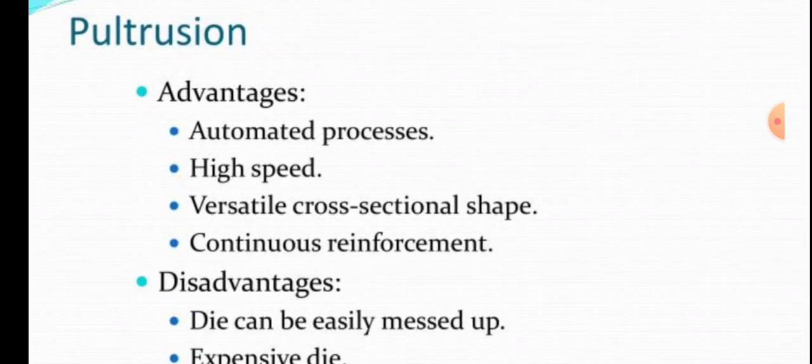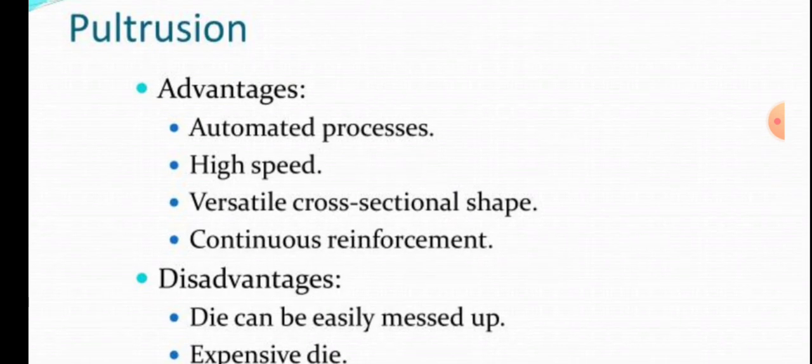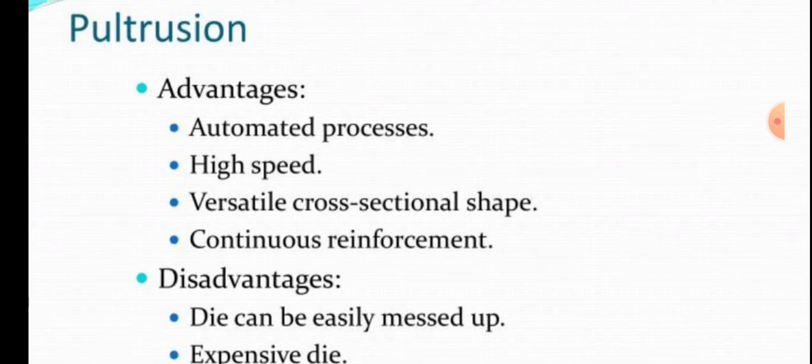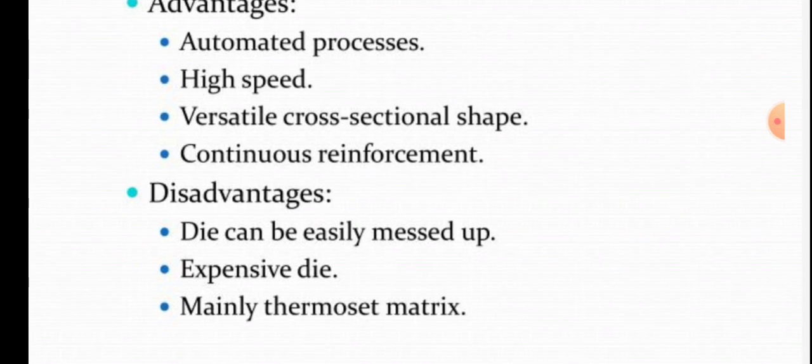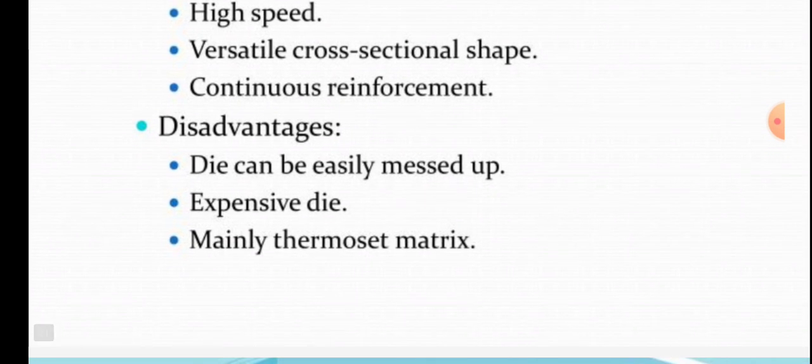Pultrusion advantages are automated processes, high-speed processes, versatile cross-sectional shape, and continuous reinforcement is performed. Disadvantages are die can be easily messed up, expensive die, and mainly thermosetting matrix is to be manufactured.